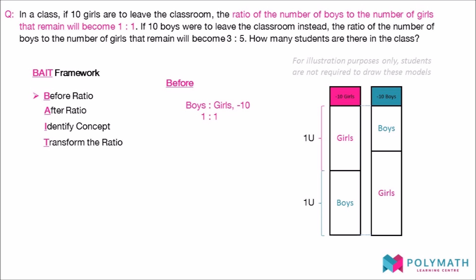Firstly, we read that if 10 girls are to leave the classroom, the ratio of boys to girls will become 1 to 1. This is the first relationship given in the question. Therefore, we write this relationship down as the before ratio.